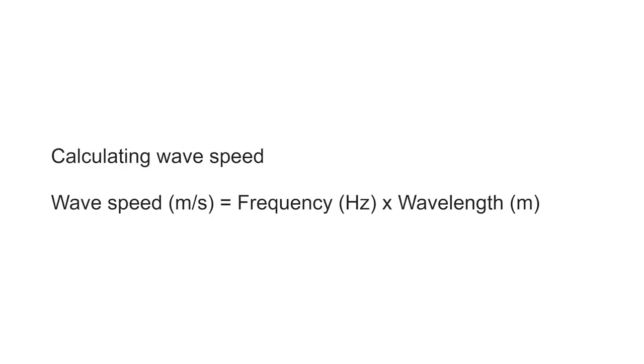Finally we need to calculate the speed of the series of waves. We do this by multiplying the wavelength of the wave that we measured earlier by the frequency you have just worked out.